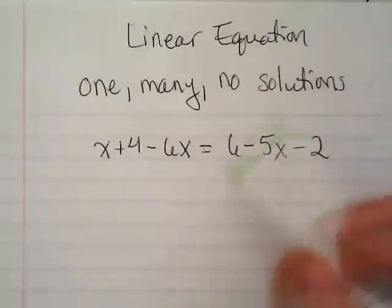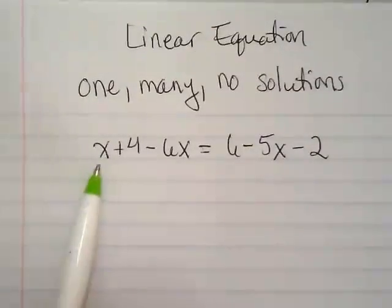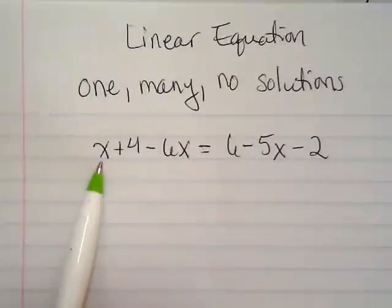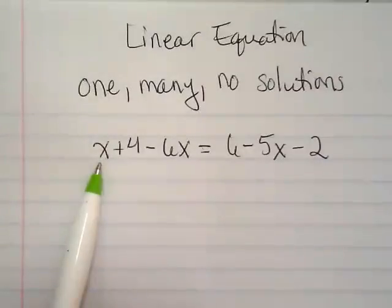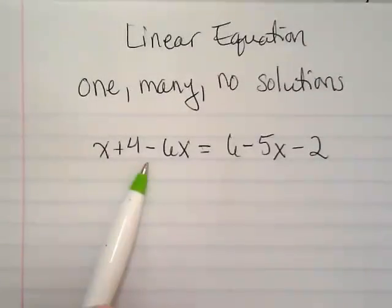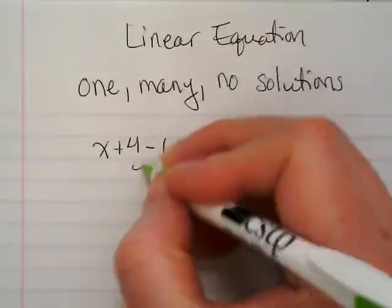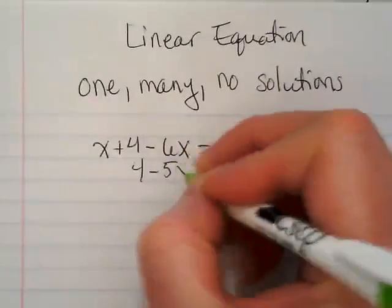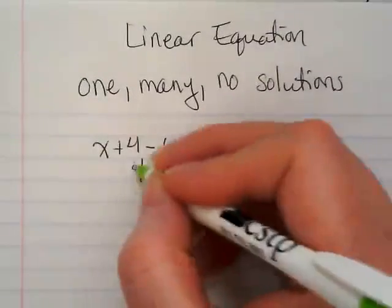Let's make our first step combining like terms. On the left side of the equation, I see an x here, which has an invisible what in front of it? One. And a negative 6x, so that's going to be 4 minus 5x, because it's positive 1 and negative 6.